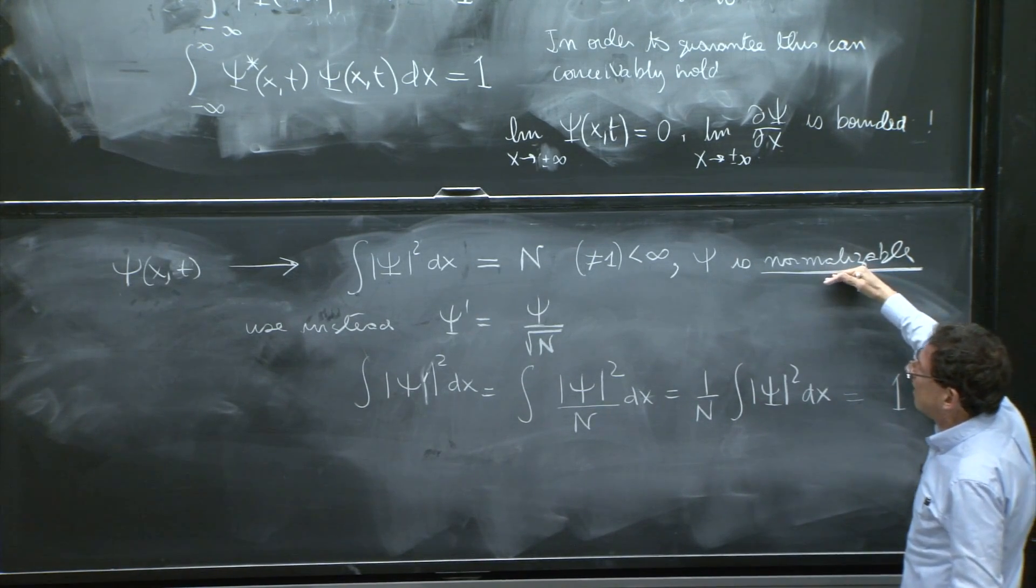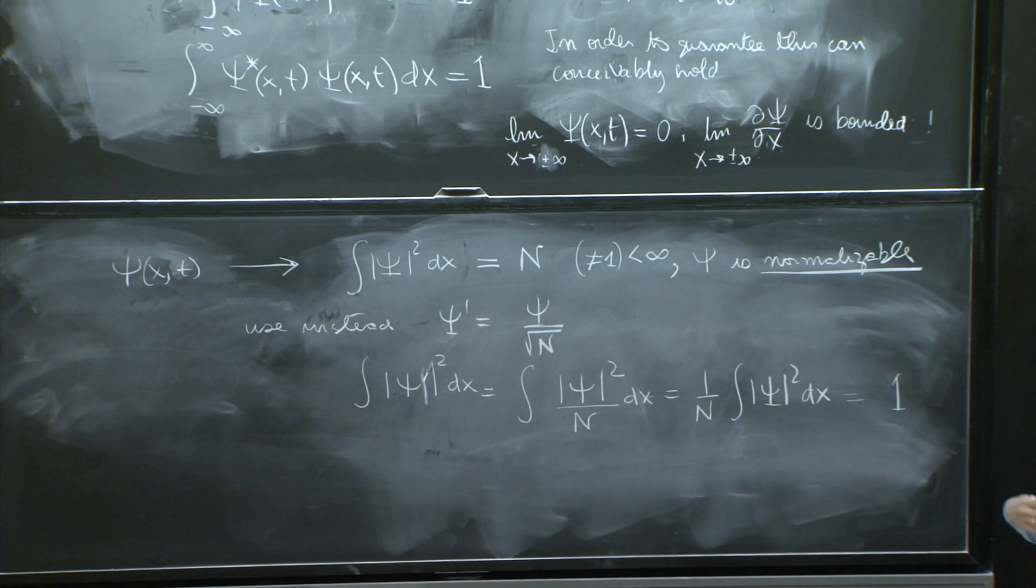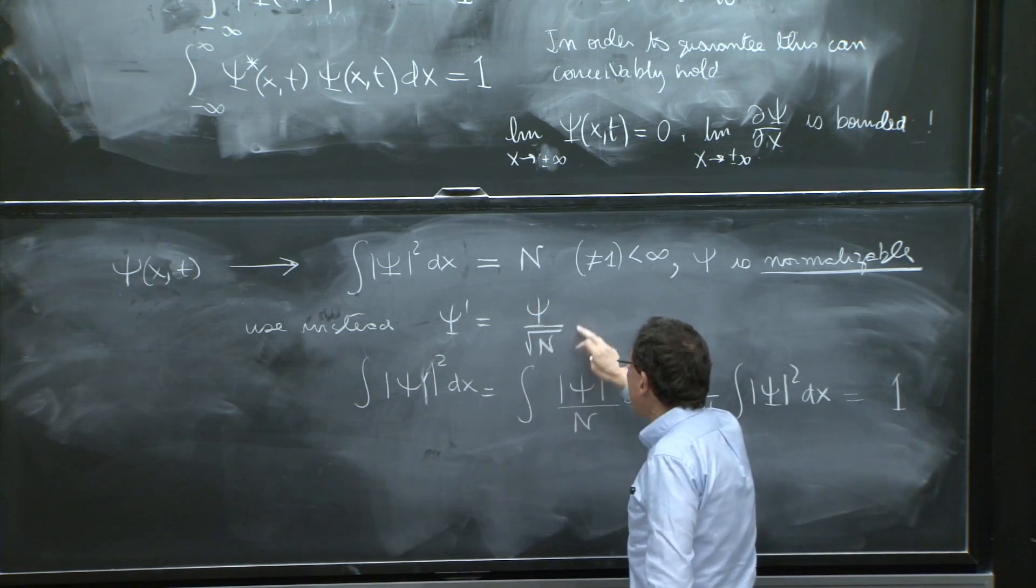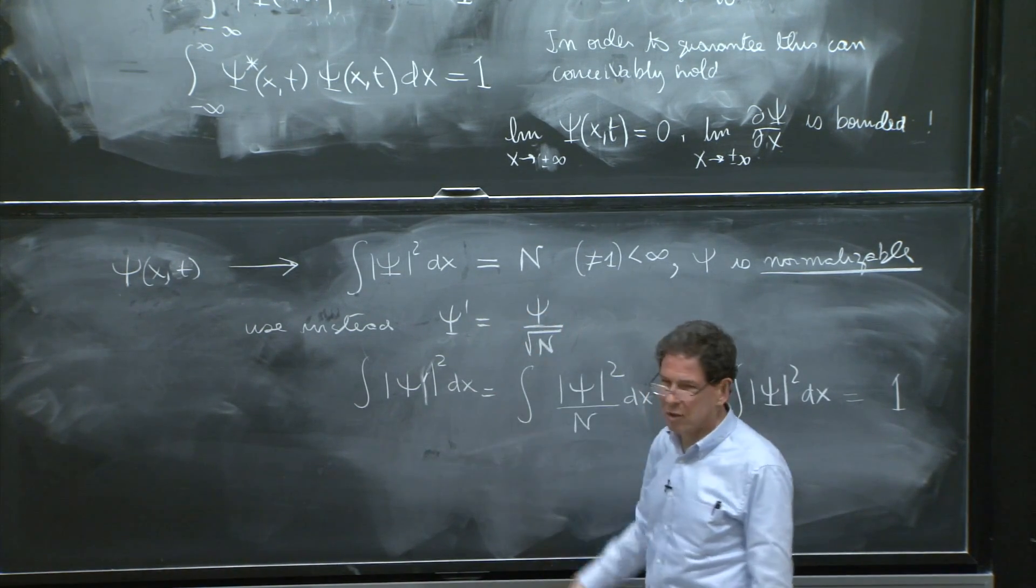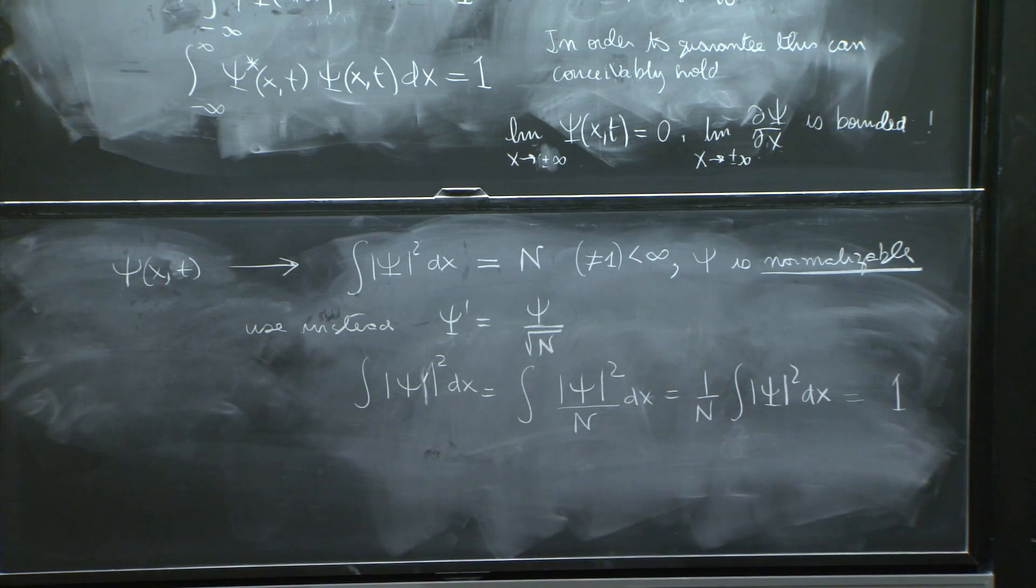So the idea remains that we work flexibly with wave functions and multiply them by numbers, and nothing changes as long as you realize that you cannot change the fact that the wave function is normalizable by multiplying it by any finite number. It will still be normalizable. And if it's normalizable, it's equivalent to a normalized wave function.